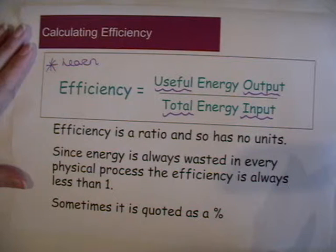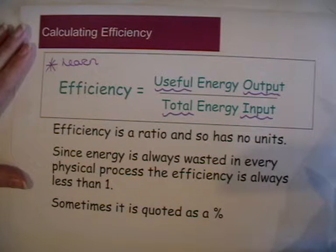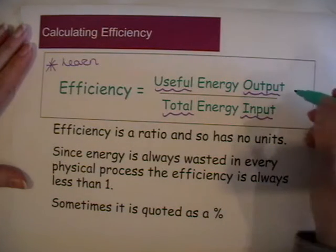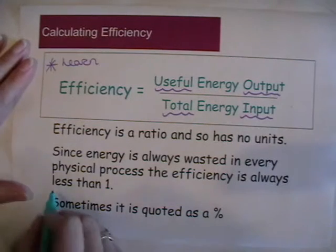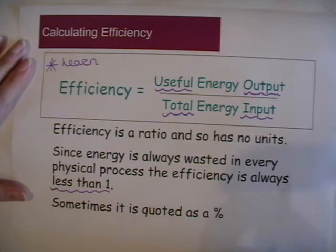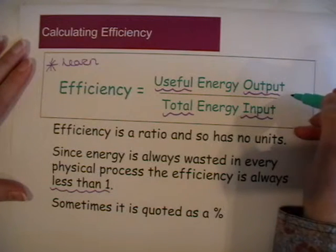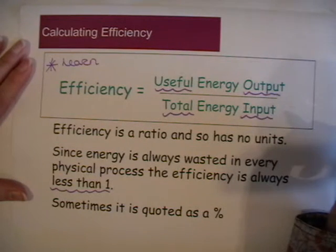Because energy is always wasted in every physical process, the efficiency is always less than 1. If you do a calculation and find you are getting a figure greater than 1, then you have put your figures in upside down and need to turn them around again. That is a good checking point: efficiency must always be less than 1, and if you get a figure that isn't less than 1, you have done something wrong — you have probably done it upside down.